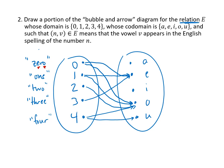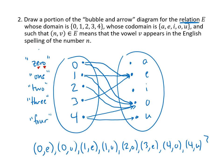If we wanted to list the ordered pairs, the ordered pairs here would be (0, E), (0, O), (1, E), (1, O), and so on. (2, O), (3, E), (4, O), and (4, U). If we put those together into a set, that is the relation E written as a set of ordered pairs.